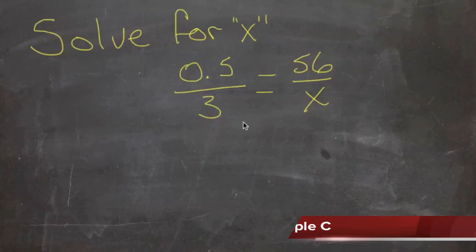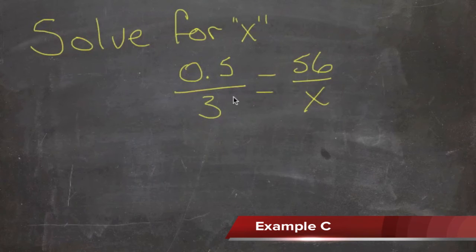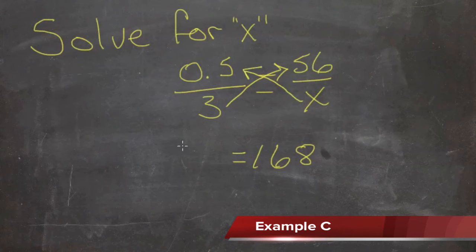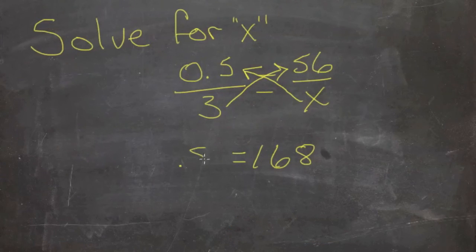Okay, one more proportion. We have 0.5 over 3 is equal to 56 over x. We use the same process. We'll go ahead and cross multiply. So we have 3 times 56, which is 168 on the right-hand side. And then x times a half is 0.5x on the left-hand side. And we need to get rid of this 0.5.